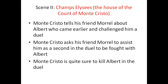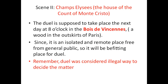Monte Cristo tells his friend Morel about Albert — that Albert came earlier and challenged him to a duel. Monte Cristo asks Morel to assist him as his second in the duel. Monte Cristo is quite sure he can kill Albert in the duel. The duel is set to take place the next day at 8 o'clock at the Bastions, an isolated and remote place free from the public — a befitting place for an illegal duel.